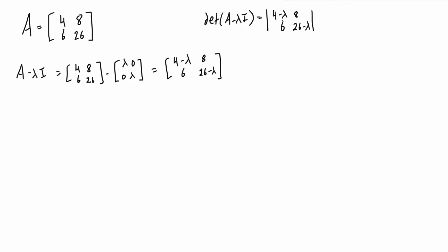In the case of a 2x2 matrix to take the determinant, we just take the product of the stuff on the main diagonal, so we have (4 minus lambda) times (26 minus lambda), and then we subtract the product of the other diagonal, so minus 8 times 6. We want to set this equal to 0 because we want to find the roots, and those will end up being the eigenvalues.